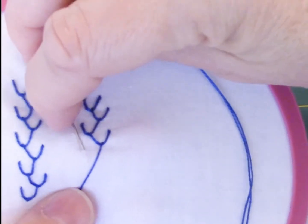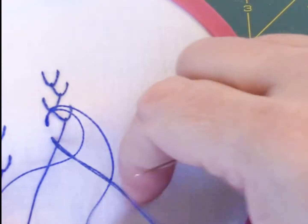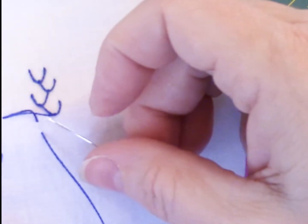And then just alternating back and forth with these, so it's like the first part of the fly stitch. We're just not doing the tail on the end.